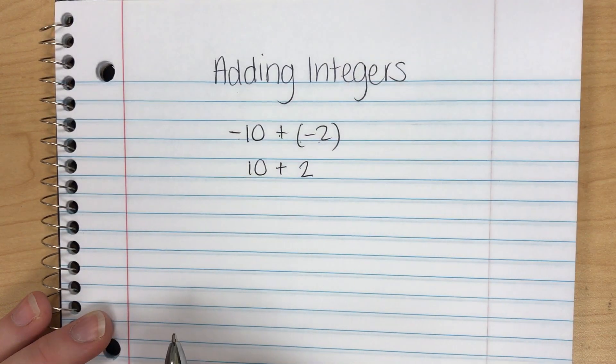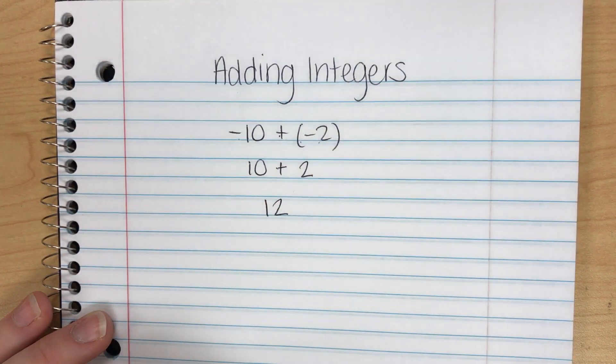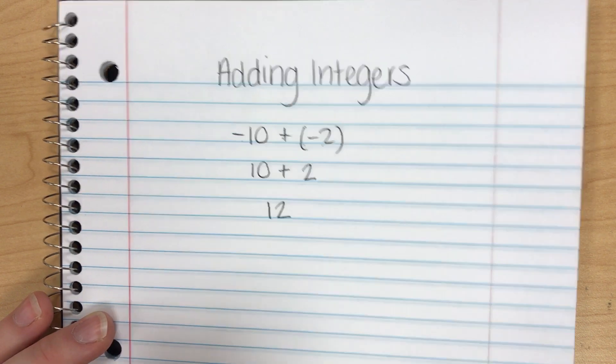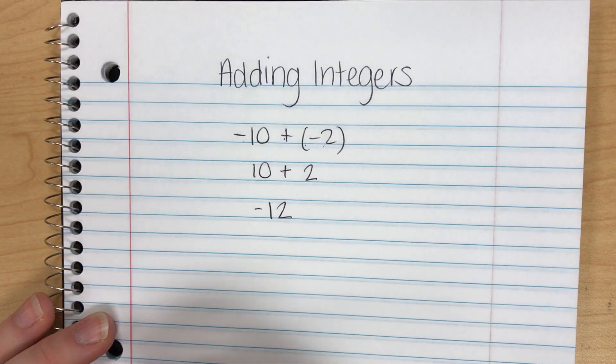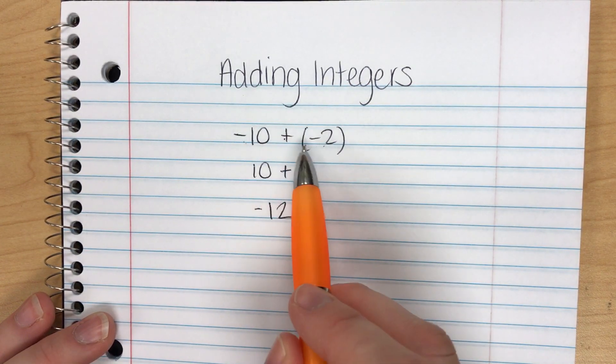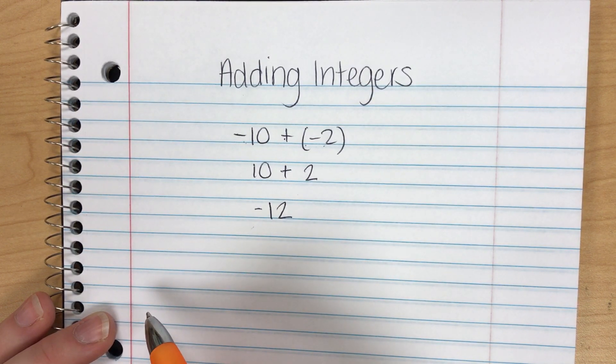Next I'm going to add these two numbers together. 10 plus 2 is of course 12, but the question becomes is my answer going to be positive or is it going to be negative? It's going to be negative because if I look back at my problem both of my original numbers were negative. So my answer has to be negative as well.